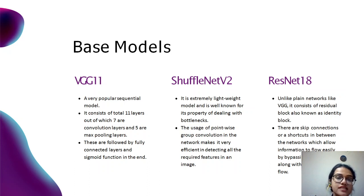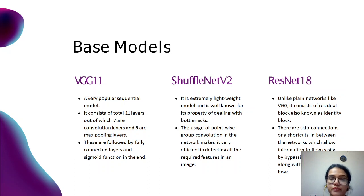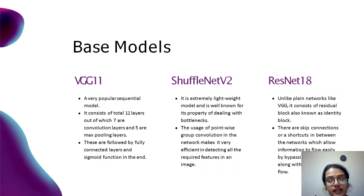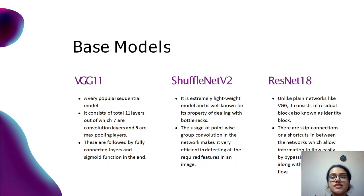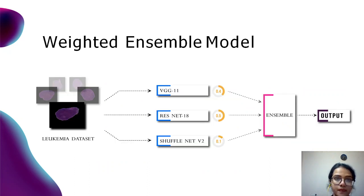VGG-11 is a very simple model consisting of only 11 layers. ShuffleNet V2 is a very lightweight model known for dealing with bottlenecks; the use of pointwise convolutions makes it very efficient in detecting features in the image. ResNet-18 consists of residual blocks enabling skip connections between layers, allowing data to pass easily between them.